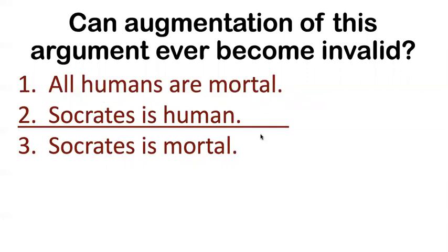If I give you another premise like 'Joe is human' — well, just because we have more people who are human, if the premises already guarantee that Socrates is mortal, nothing else we could say is going to take that away. We've already got enough structure in these things to guarantee that Socrates is mortal.